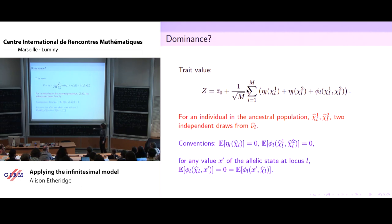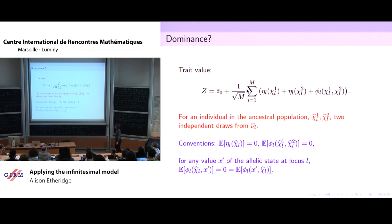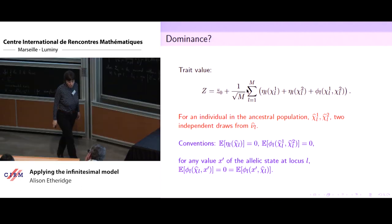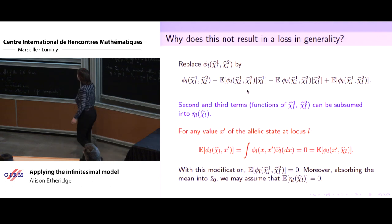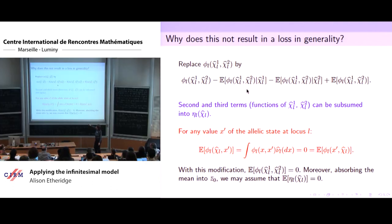We make some conventions. Amandine already had that the expected additive effect at each locus is zero. I'll also suppose this expectation is zero, and we'll see why that's not resulting in a loss of generality. In fact, if I fix the allelic state at one locus and average over the other, I also get something mean zero — because of what a statistician might call a Hoeffding decomposition.